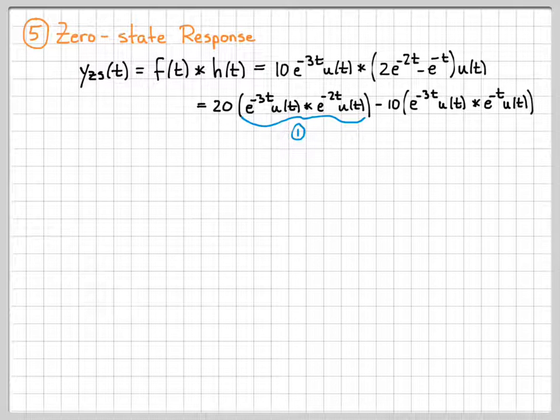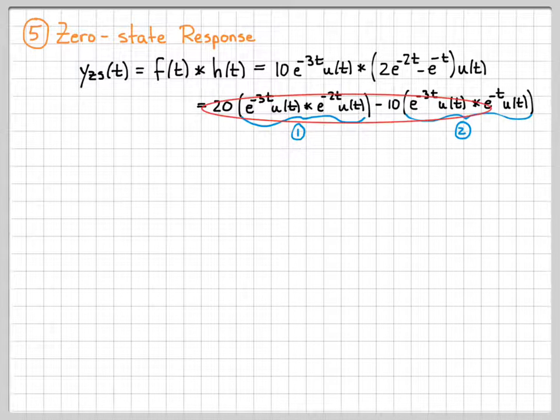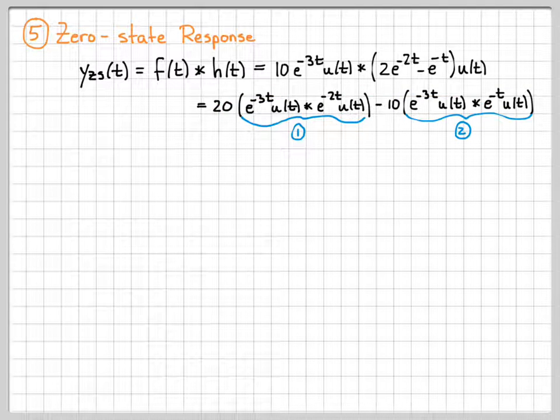So I'm going to break this down. I'm going to think of this as term one. And I'm going to think of this as term two. And I'm going to work two different convolutions. Once I know what one and two are, we'll piece it back into this overall equation to have the zero state response.